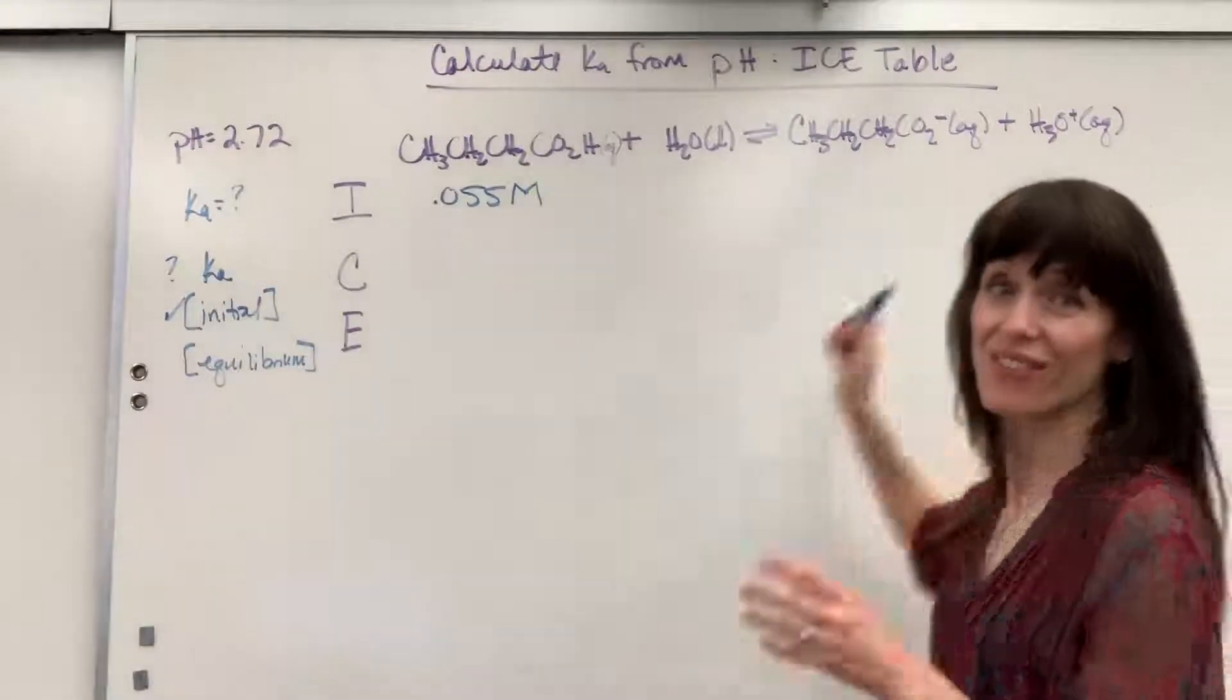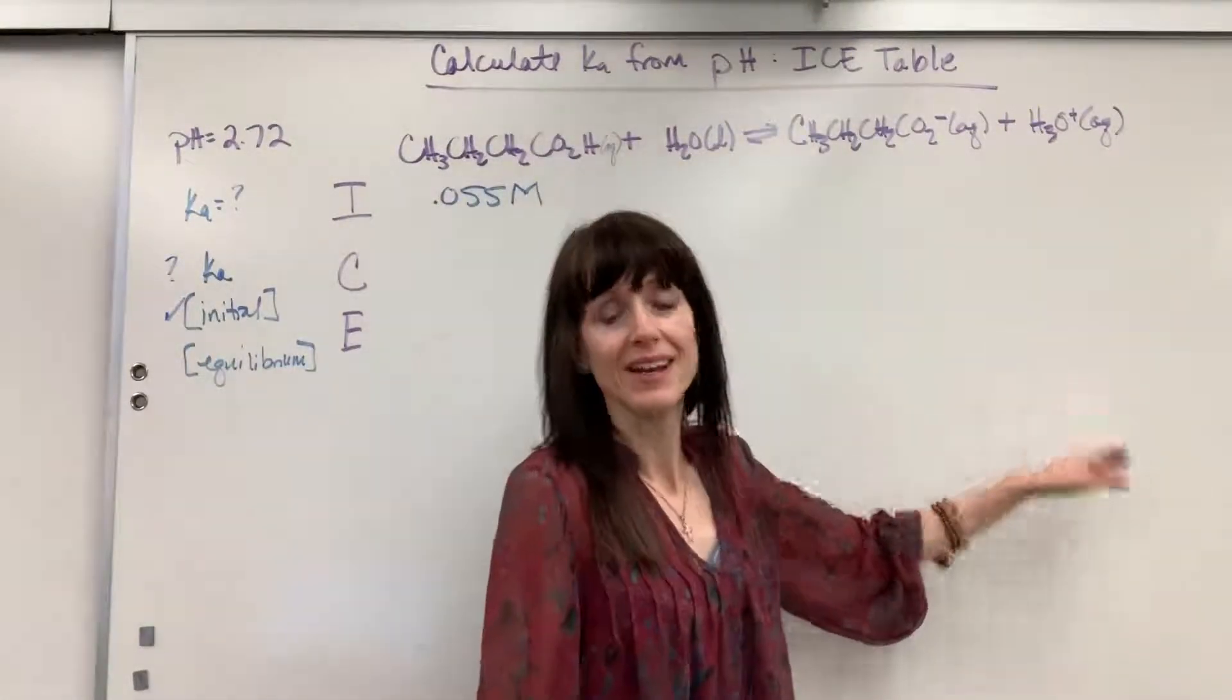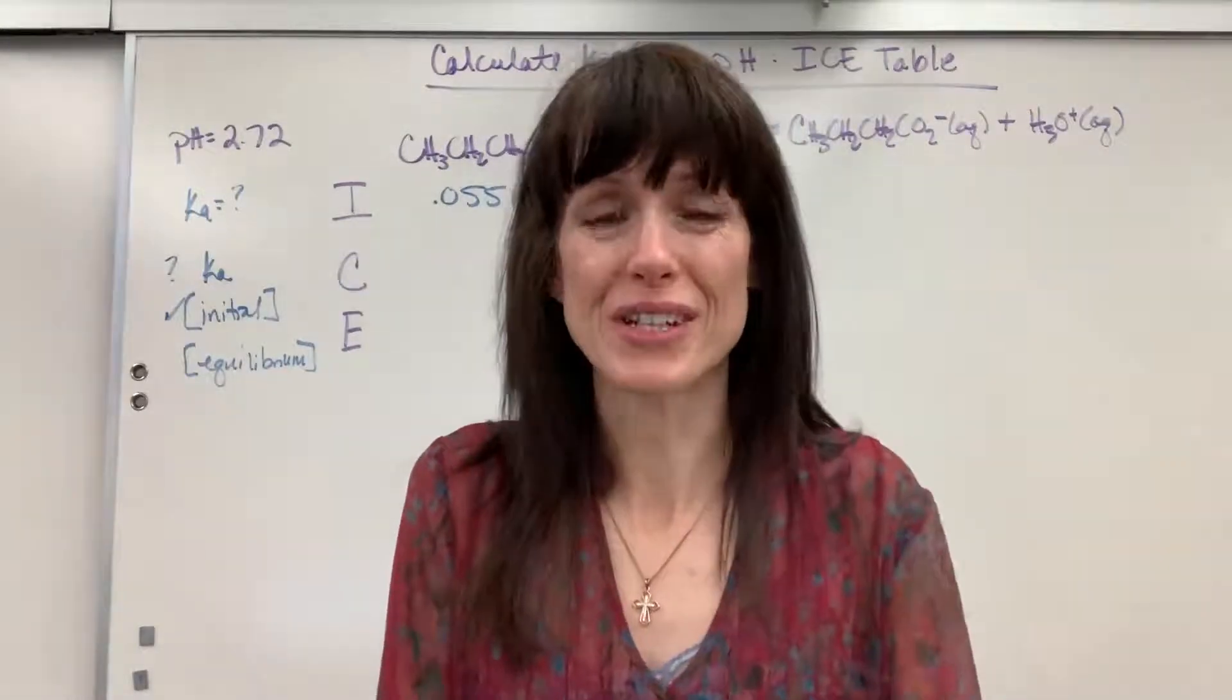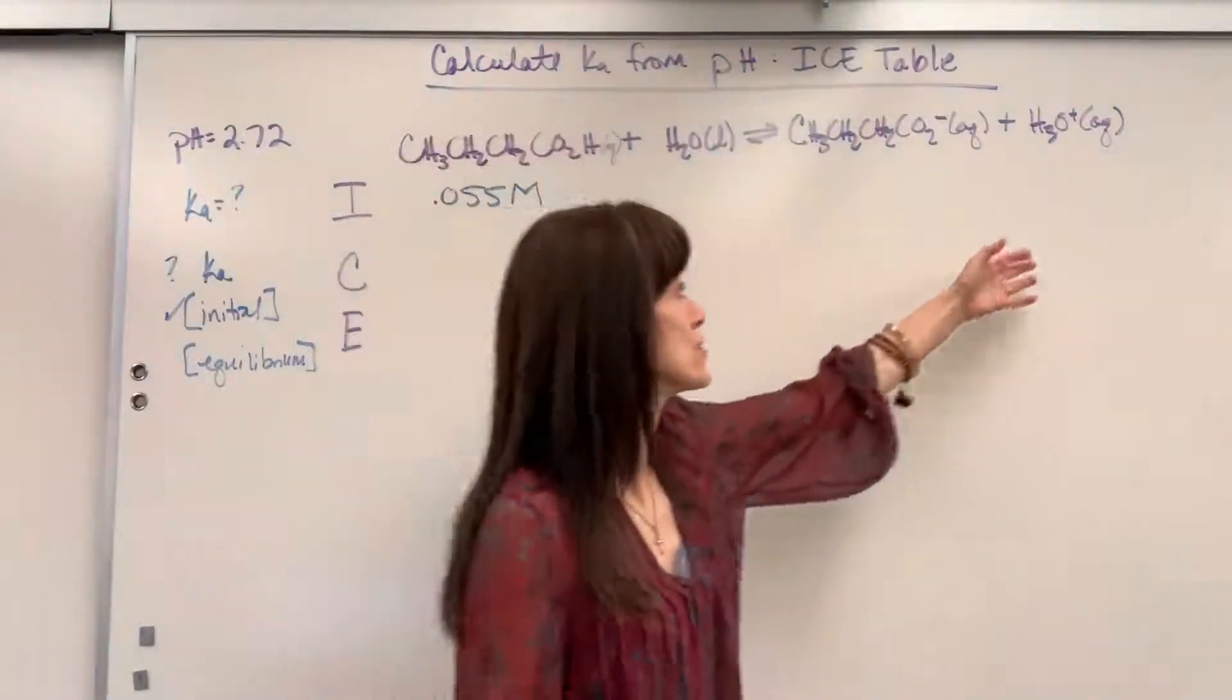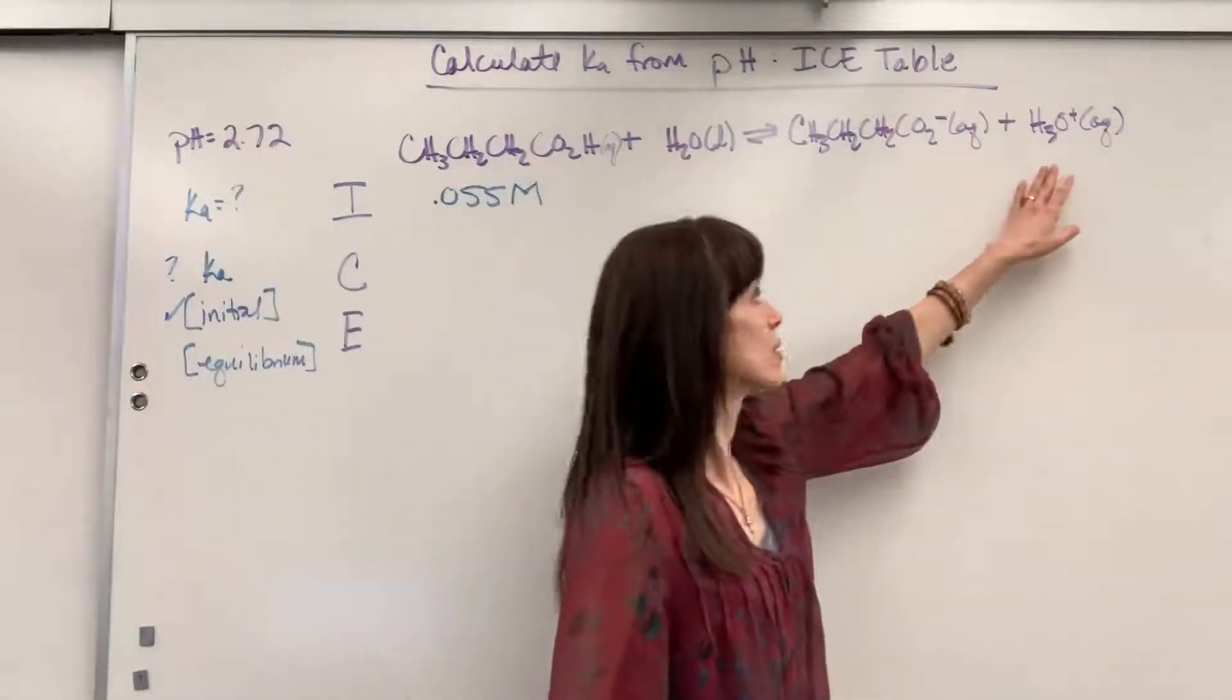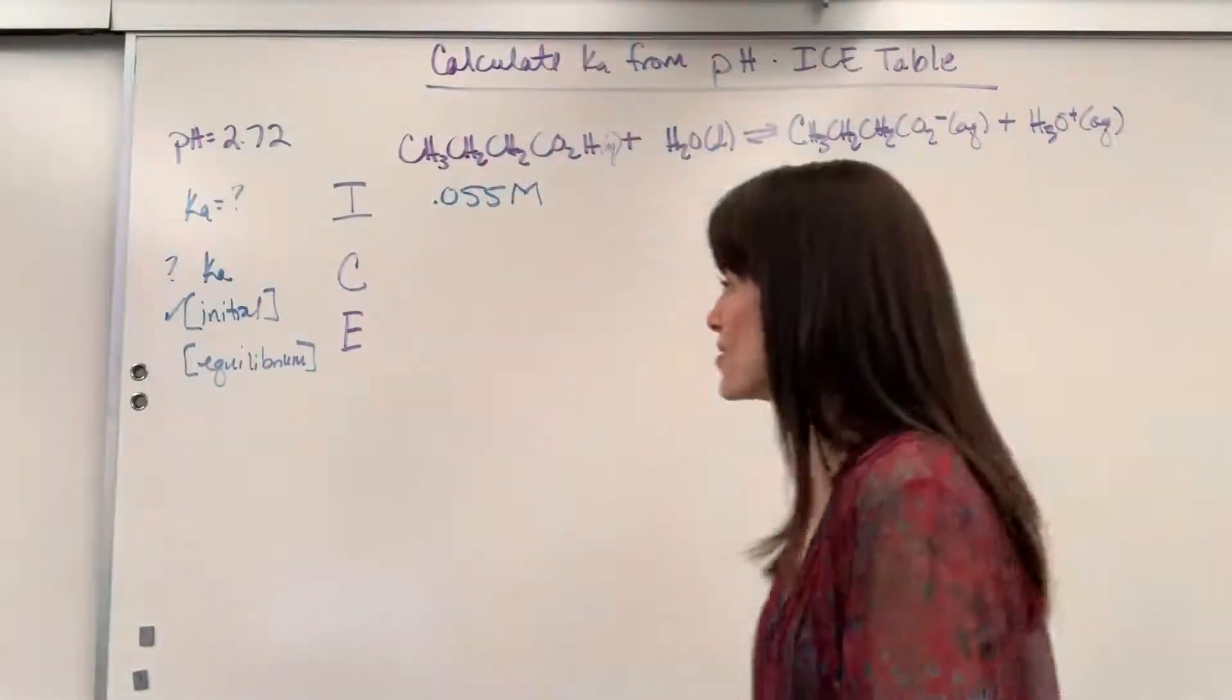So check it out. One of our products is hydronium ion. That's how we get pH. pH is per hydrogen, the amount of hydrogen. So we can use pH to find the hydronium at equilibrium. So let's do that.